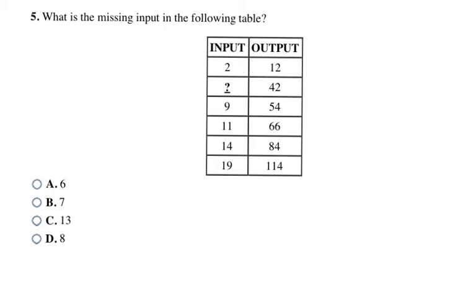This tells me that my pattern is not going to be addition. I'm going to try multiplication. If I do multiplication, 2 times 6 gets me 12. 9 times 6 equals 54. 11 times 6 gets me 66, and the same for the rest of these also. So that means I'm looking for the number that if I multiply 6 by it, it will get me the 42. So what times 6 equals 42?